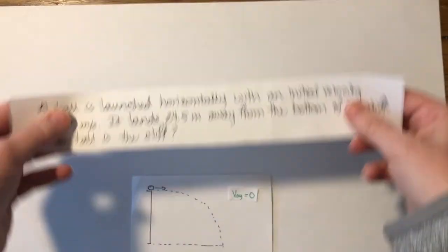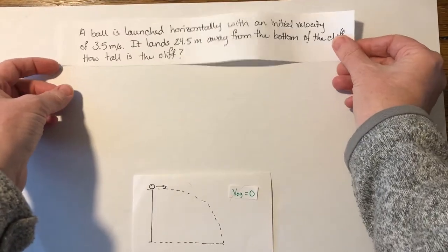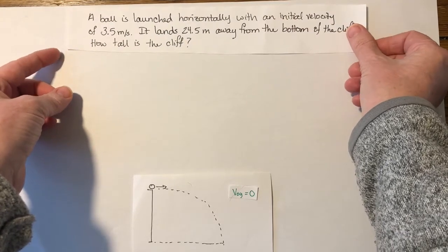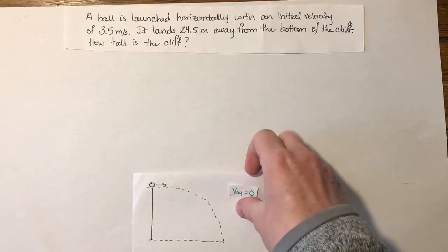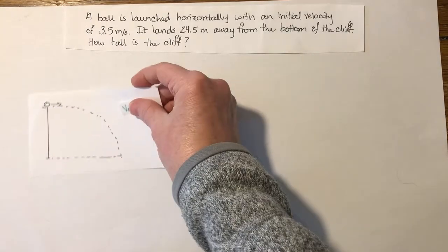The question for this one is about a ball that is launched horizontally with an initial velocity of 3.5 meters per second. It lands 24.5 meters away from the bottom of the cliff, and the question says how tall is the cliff. So as always, we start with our detailed drawing.